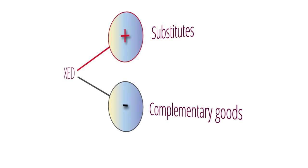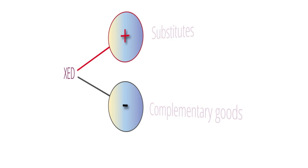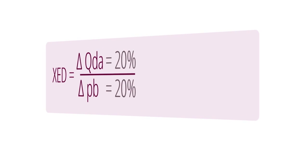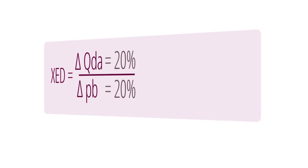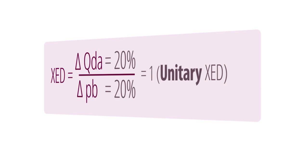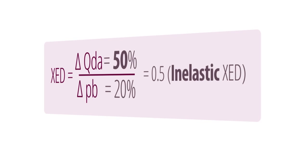However, there is another aspect to cross-elasticity: exactly how responsive, that is, how elastic, the demand for one good is to a change in the price of another one. Economists use the concept of proportionate to assess the degree of response. If the demand for one product changes in the same proportion as the price of another one, then the result is proportionate and XED will equal 1 — cross-elasticity is said to be unitary. When the coefficient is less than 1, the cross-elasticity is inelastic, and when it is greater than 1, it is elastic.